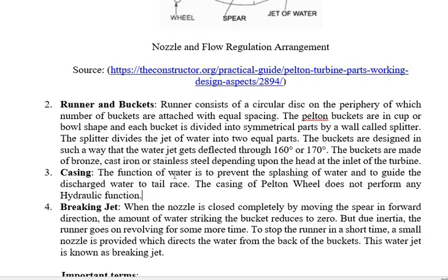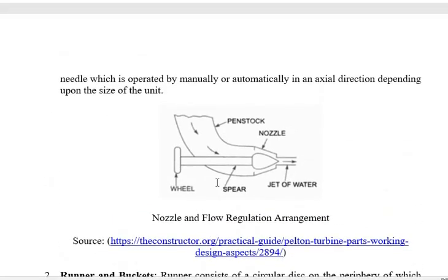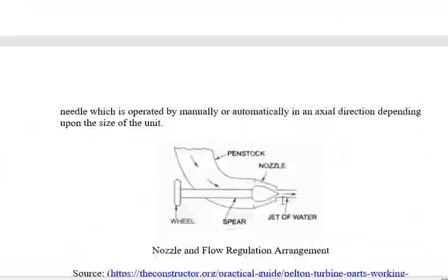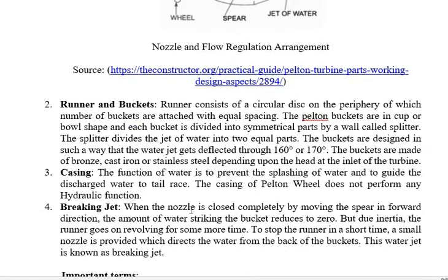The casing functions to prevent water from splashing out of the turbine arrangement and to guide the discharge water to the tail race. The outer casing is required so that the water flows to the tail race after striking the buckets.